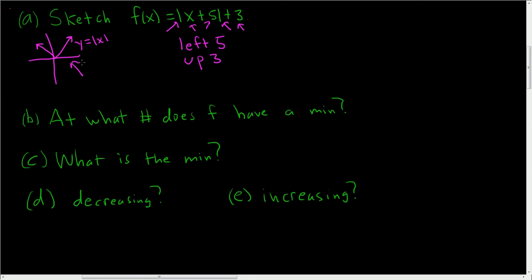So you take this picture and shift it left 5 and up 3. Let's do it over here. There's the Y-axis, there's the X-axis. Starting in the middle, we'll take this point and go left 5 and up 3. So here's 5 and here's 3, so it's right there. And then we just draw the V.